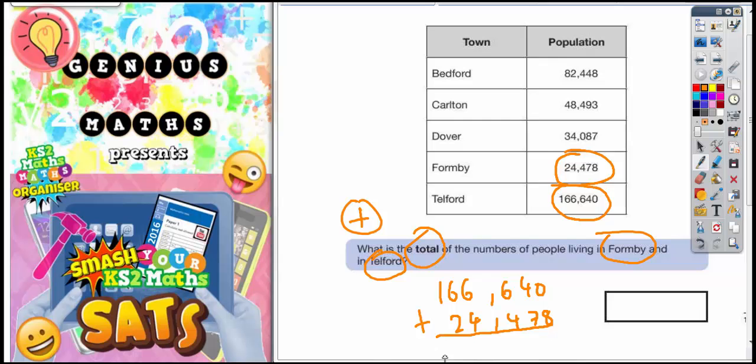Let's work it out. So 0 plus 8 is 8. 4 plus 7 is 11. Put the 1 in, carry the 1. 6 plus 4 is 10, plus the 1 we've carried is 11 again. Put the 1 in, carry the 1. Remember your comma goes there.